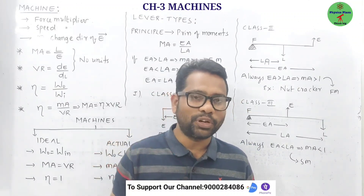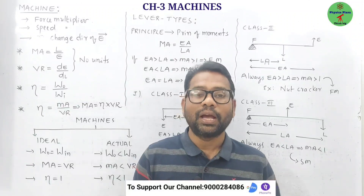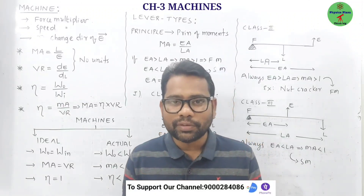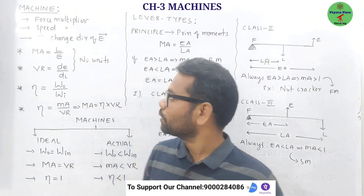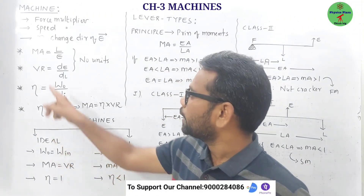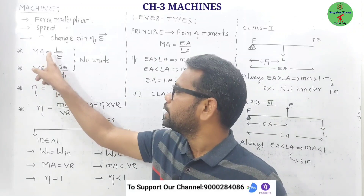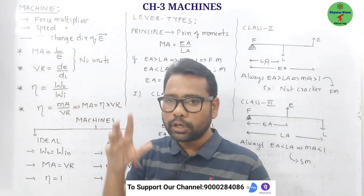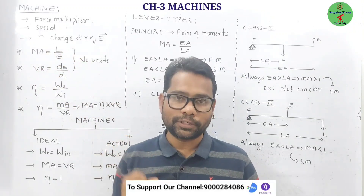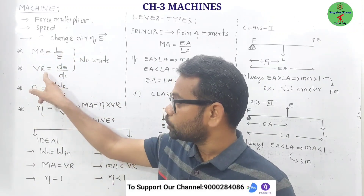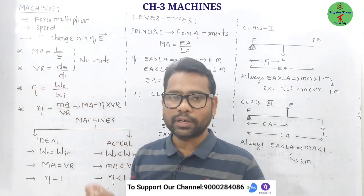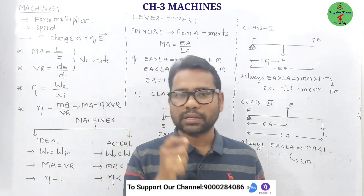A machine can also change the point of application of effort to a convenient point. Here, some terms are very important from an examination point of view. What is mechanical advantage? It is the ratio between load and effort. Next is velocity ratio — this is very important, so in exams they may ask a question about it.